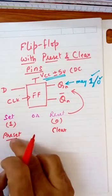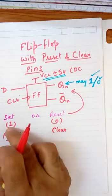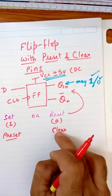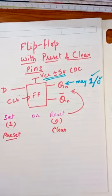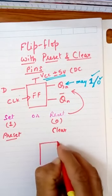Preset means we require the output as 1, and clear means we require the output as 0. So we add another pin to this flip-flop.